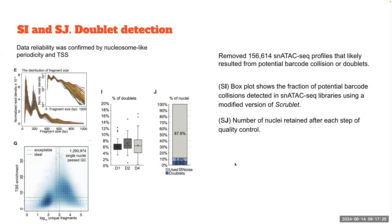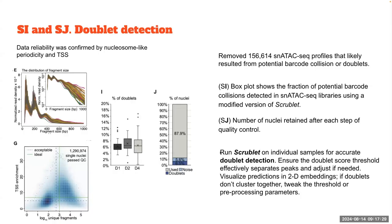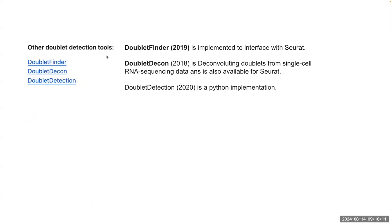This doublet removal approach is interesting. When running Scrublet on individual samples for accurate doublet detection, the purpose is to ensure the threshold effectively separates real peaks from the theoretical distribution expected for these profiles. If doublets don't cluster together after analysis, they tweak the threshold and processing parameters. In total, more than one million nuclei were retained. Alternative doublet detection tools include DoubletFinder and DoubletDecon for R, and the doublet-detection package for Python.